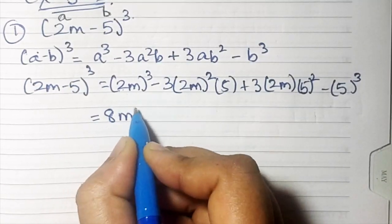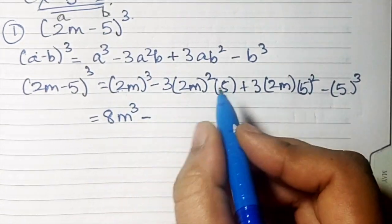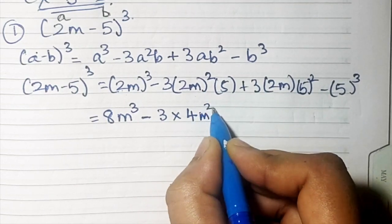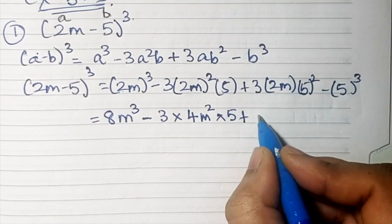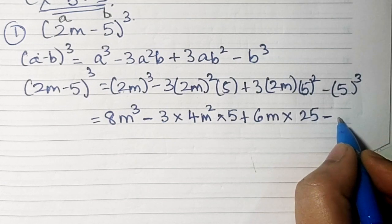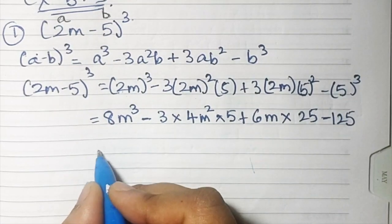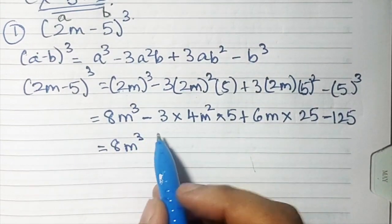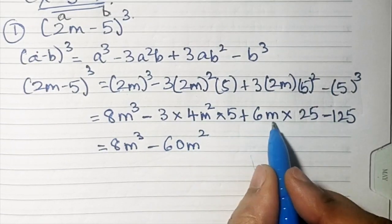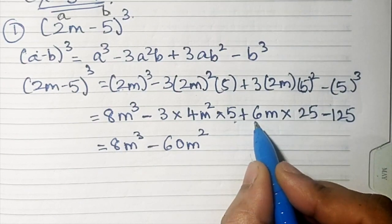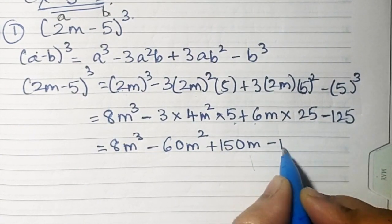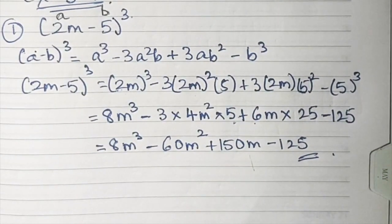Cube of 2 is 8, so we get 8m³. Minus 3 times 4 times m² times 5 gives 60m². Then 3 times 2m times 25 gives 150m. Minus 5³ is 125. So the answer is 8m³ - 60m² + 150m - 125. That's the answer for your first sum.